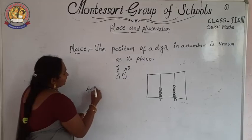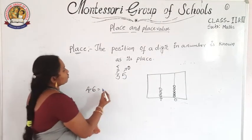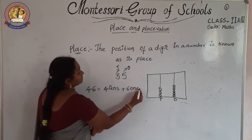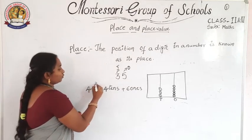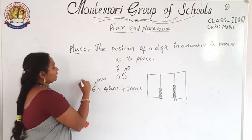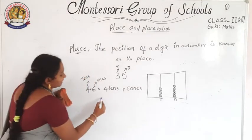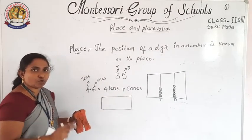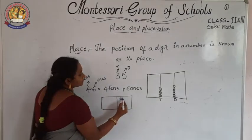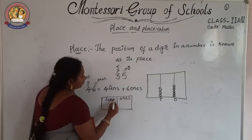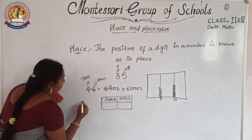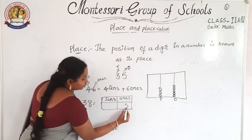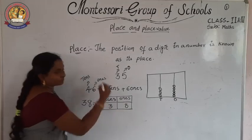For example, take 46. Now 4 is in tens place and 6 is in ones place. We are discussing only 2-digit numbers. So the place value chart has ones and tens. For example, I am giving 38: 8 is in ones place, 3 is in tens place.